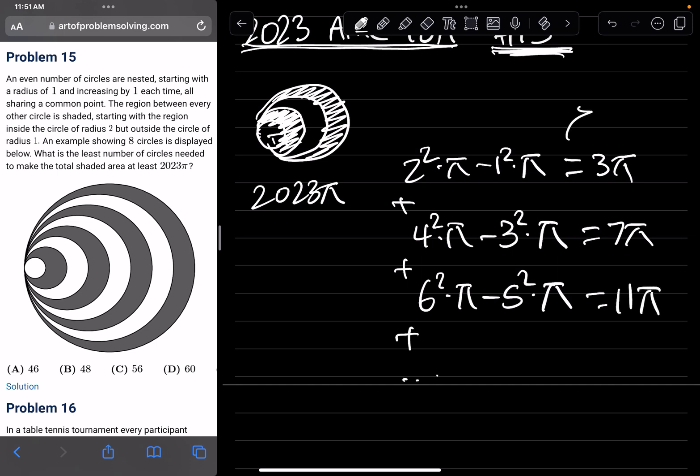Now, we could rewrite 3 to be 1 + 2 times π. And 7 could be rewritten as 3 + 4 times π. And 11 could be rewritten as 5 + 6 times π. So we could see a pattern emerging.